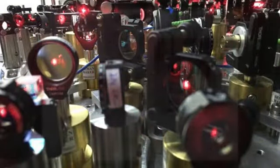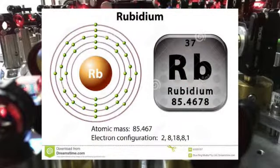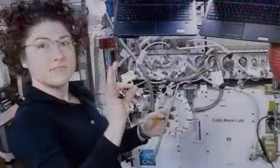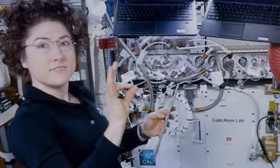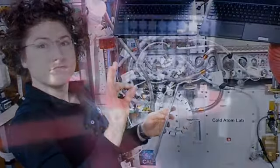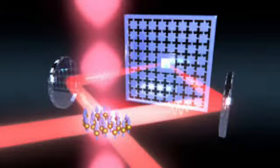In July 2018, an experiment aboard the International Space Station cooled a cloud of rubidium atoms to 10 millionths of a degree above absolute zero, producing a Bose-Einstein condensate in space.